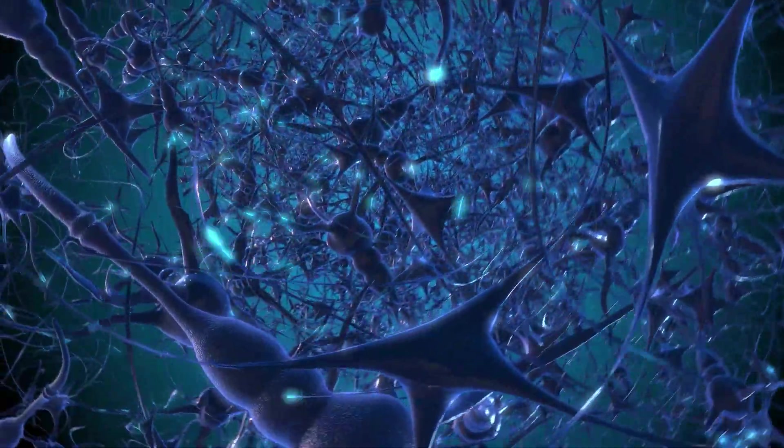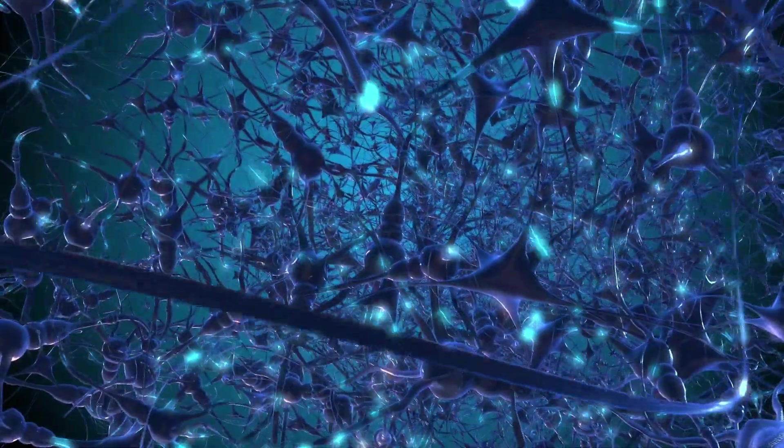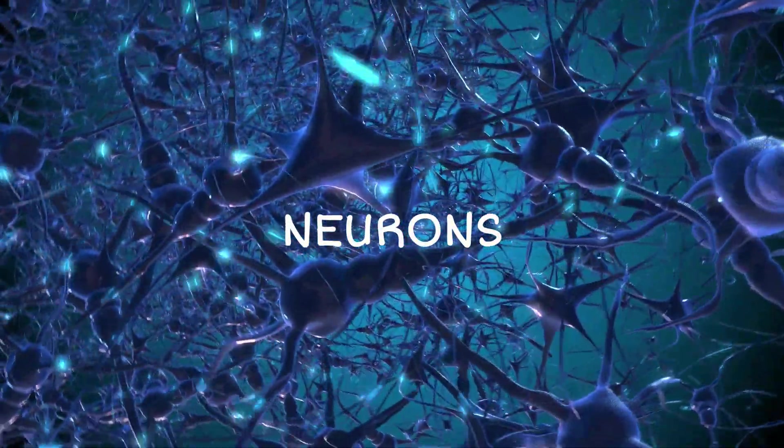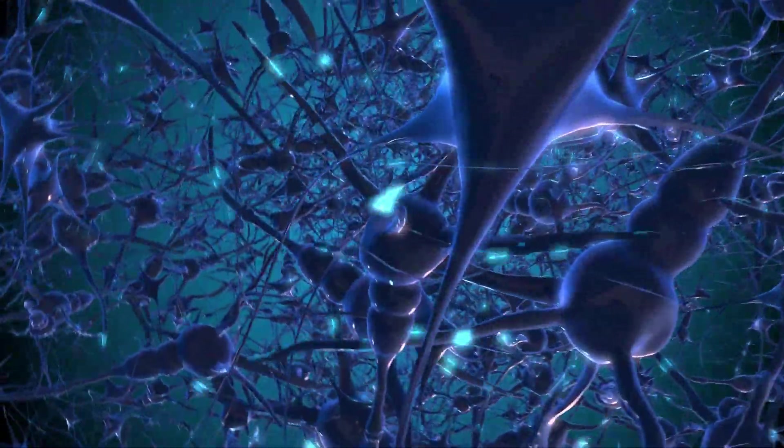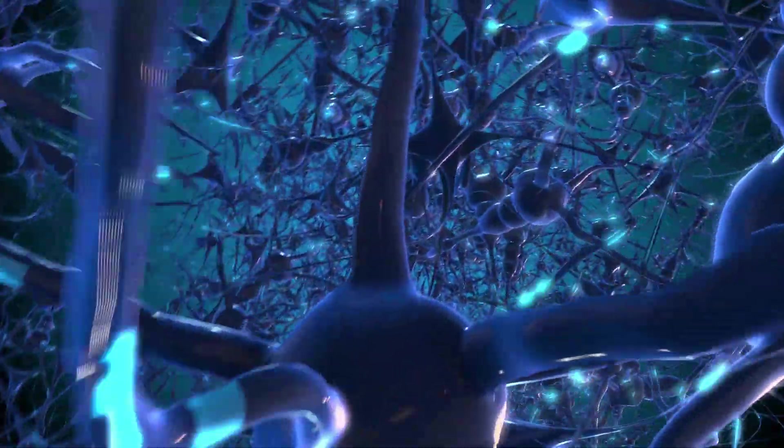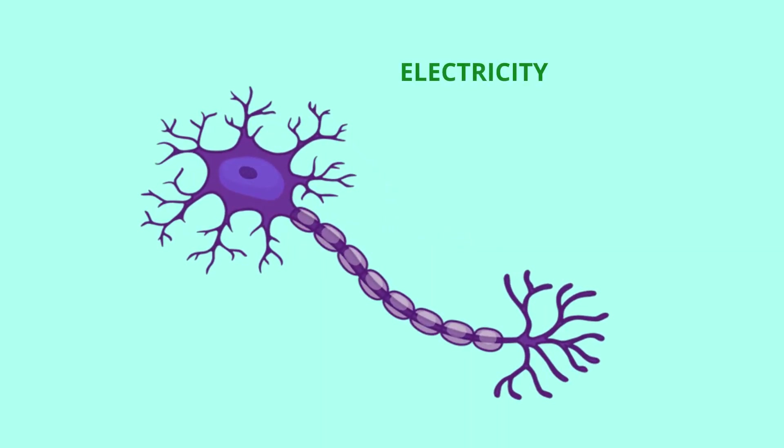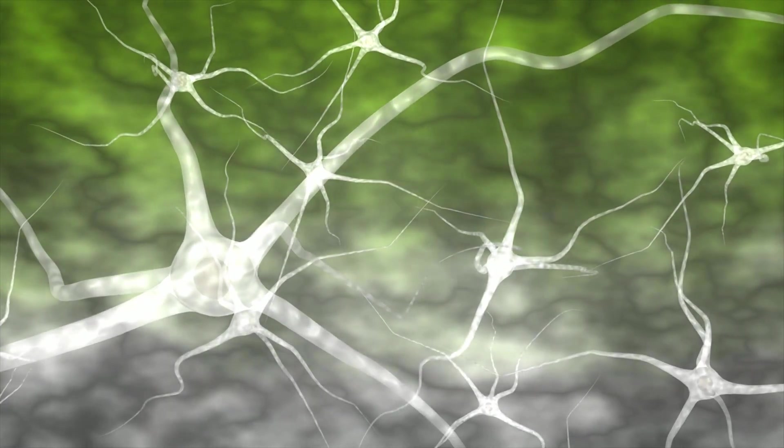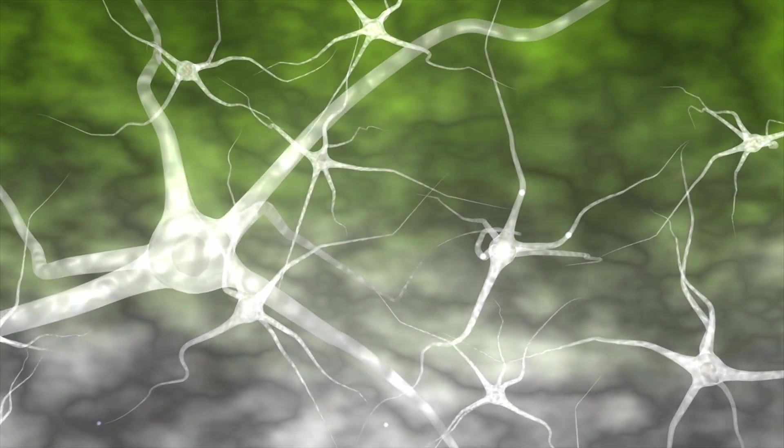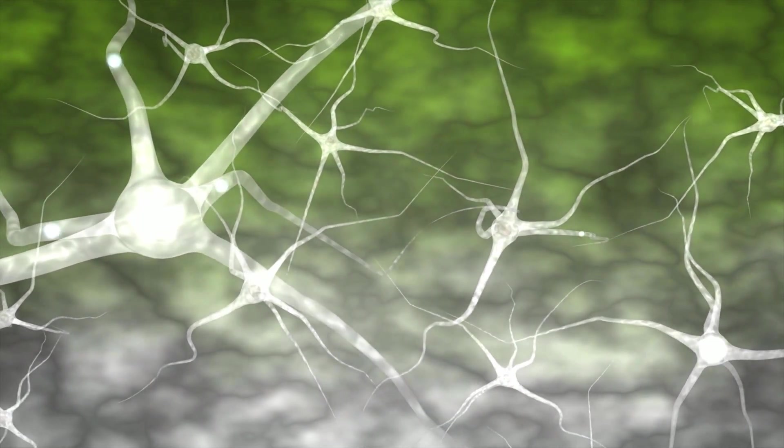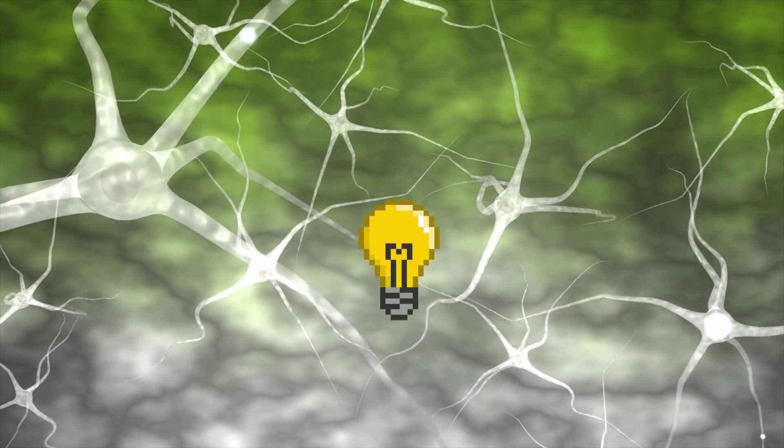This is because your brain contains about 100 billion microscopic cells called neurons, which are cells within the nervous system that transmit information to other nerve cells, muscles, or gland cells. Neurons communicate using electricity and chemicals. When neurons receive or send messages, they transmit electrical impulses along the axon. And while a single neuron generates only a tiny amount of electricity, together, it can generate enough electricity to power up a small bulb.